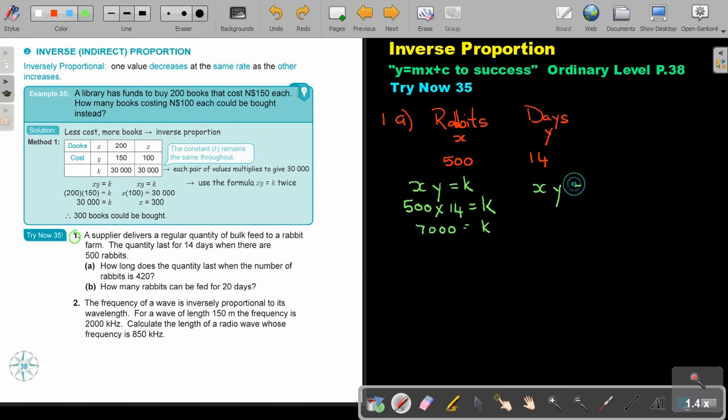Then I use this formula again. I put in the 7,000, and I put now, remember, how long does the quantity last when the number of rabbits is 420? So in the place it's 420. And I divide by 420, and the value of Y will be 16.67 days. So therefore, how long does the quantity last? It will last 16.67 days, so almost 17 days.